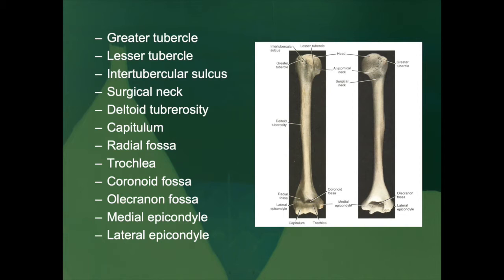Moving down along the bone, the body or shaft of the humerus is generally cylindrical in nature. It is most cylindrical at its proximal end, then gradually becomes more triangular and flattened as it moves distally. There is a rough V-shaped area called the deltoid tuberosity, visible on the lateral aspect of the bone structure, and based upon its name it is importantly connected to the deltoid muscle group.